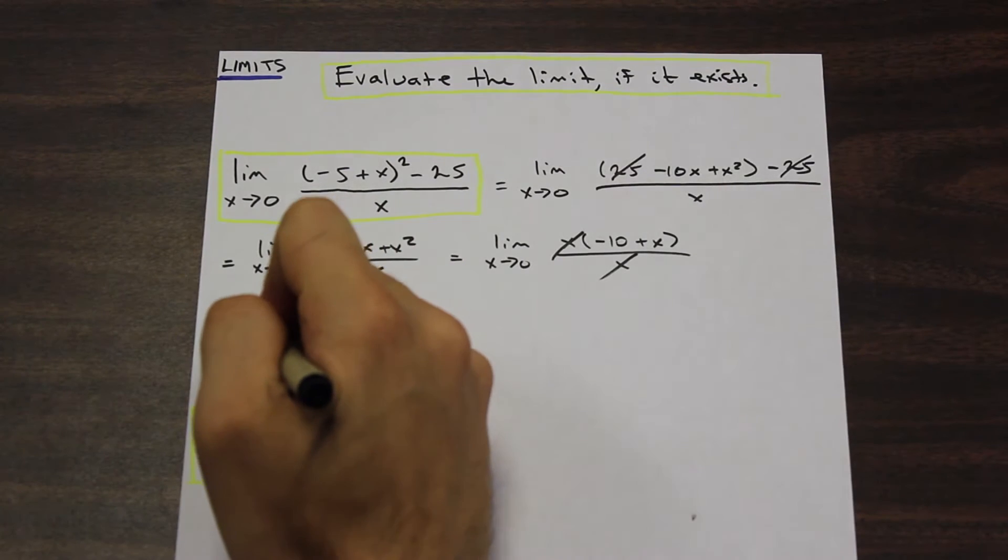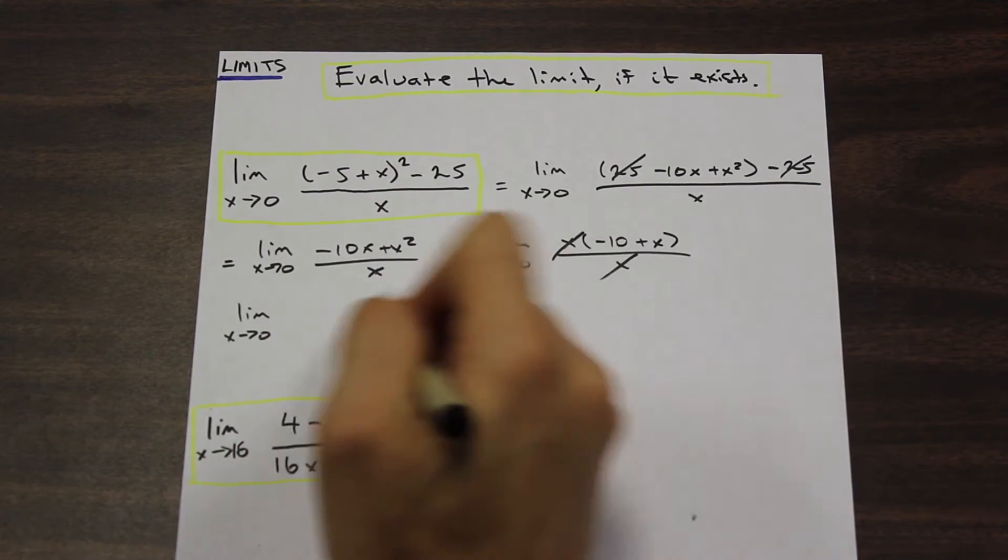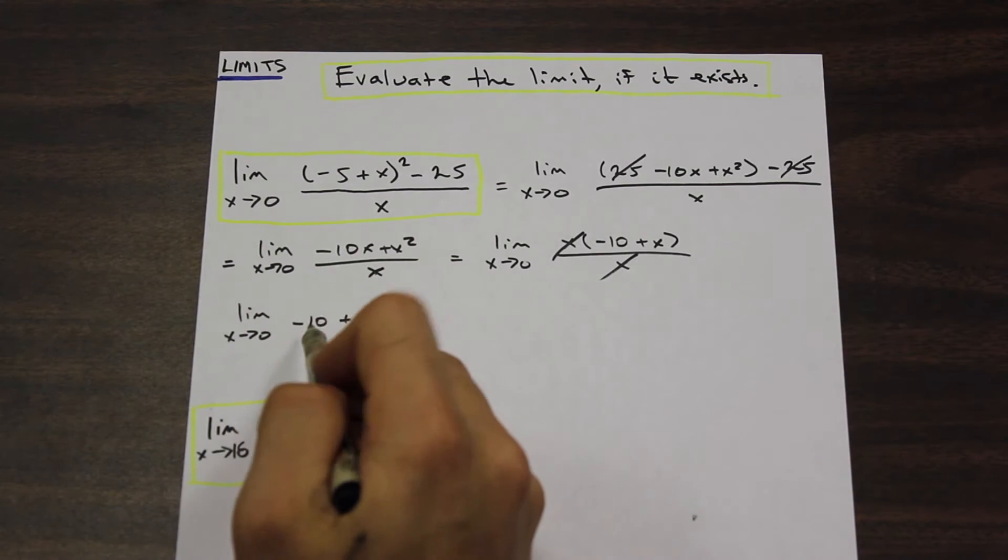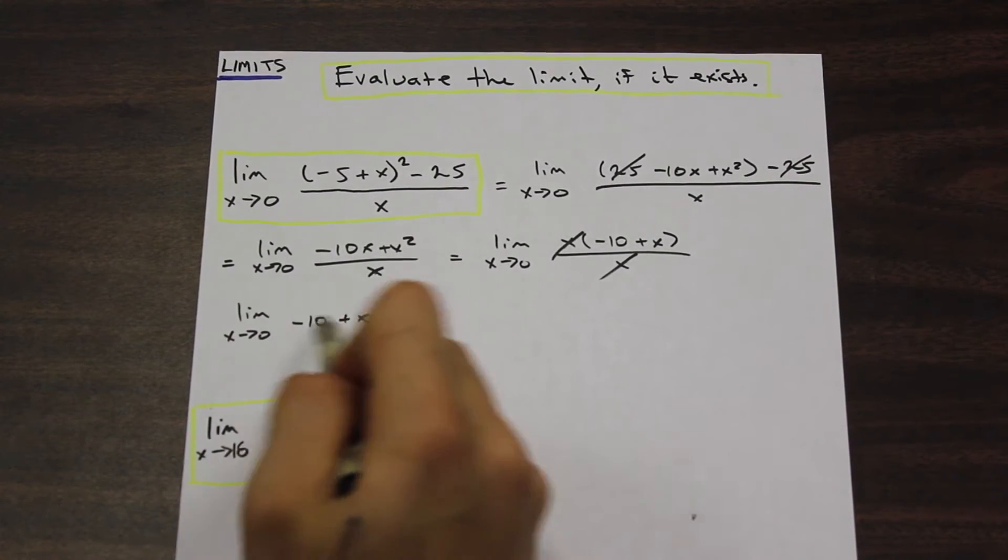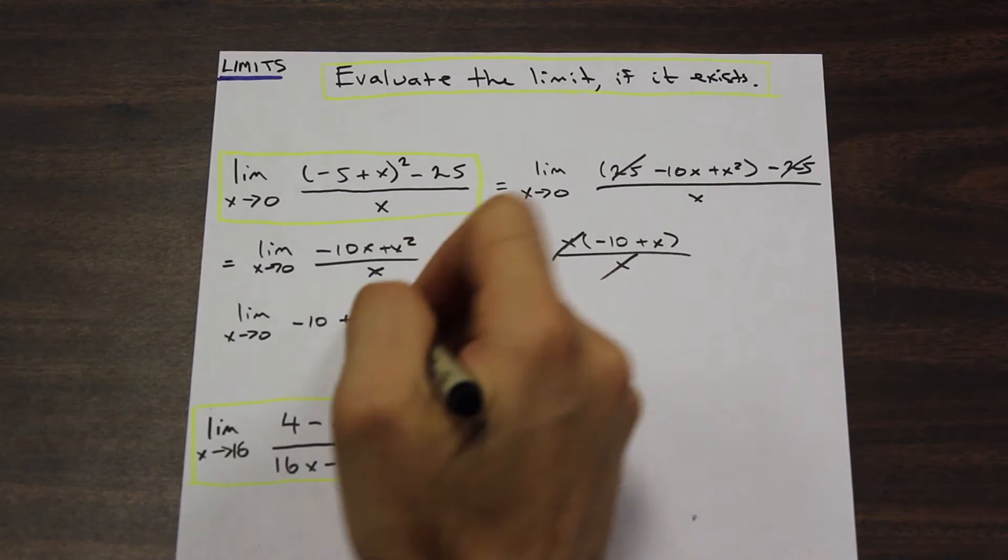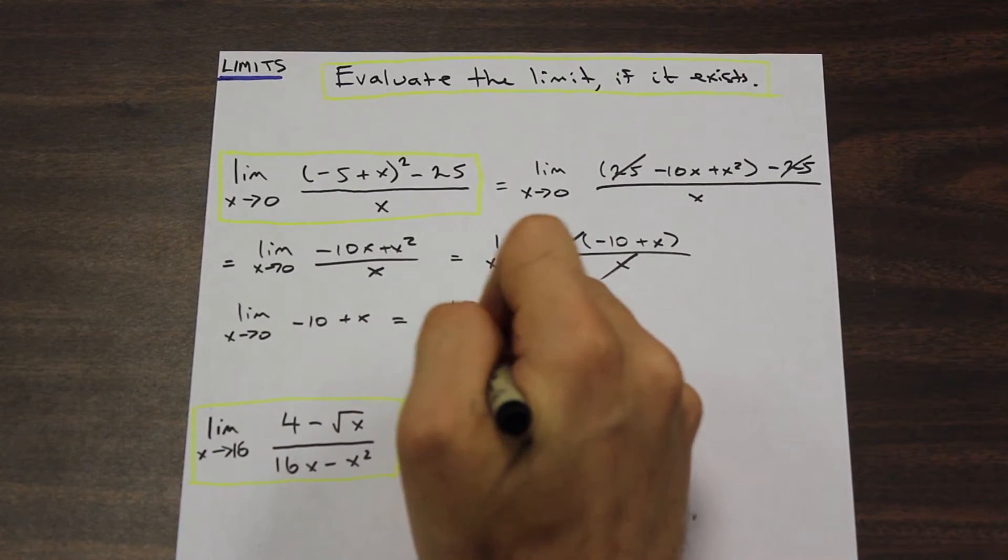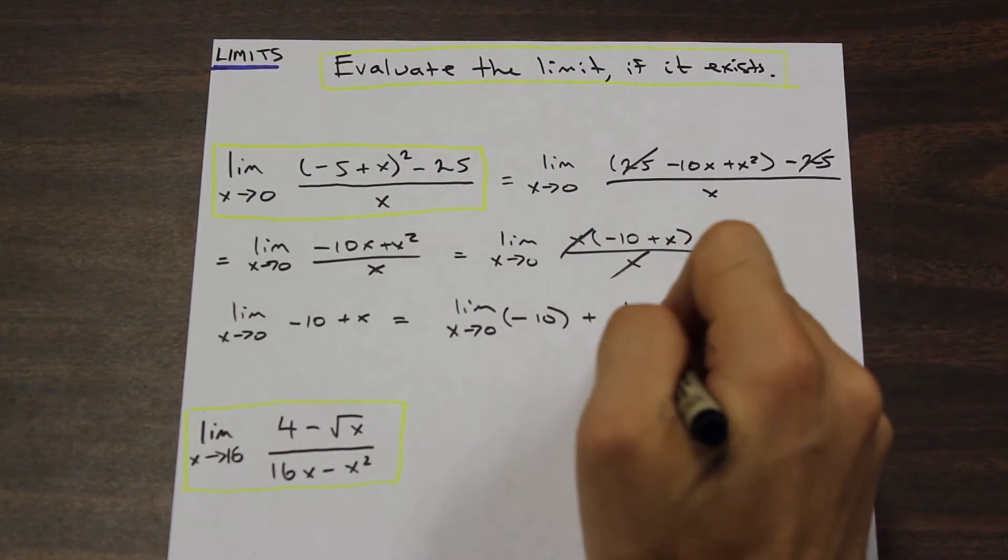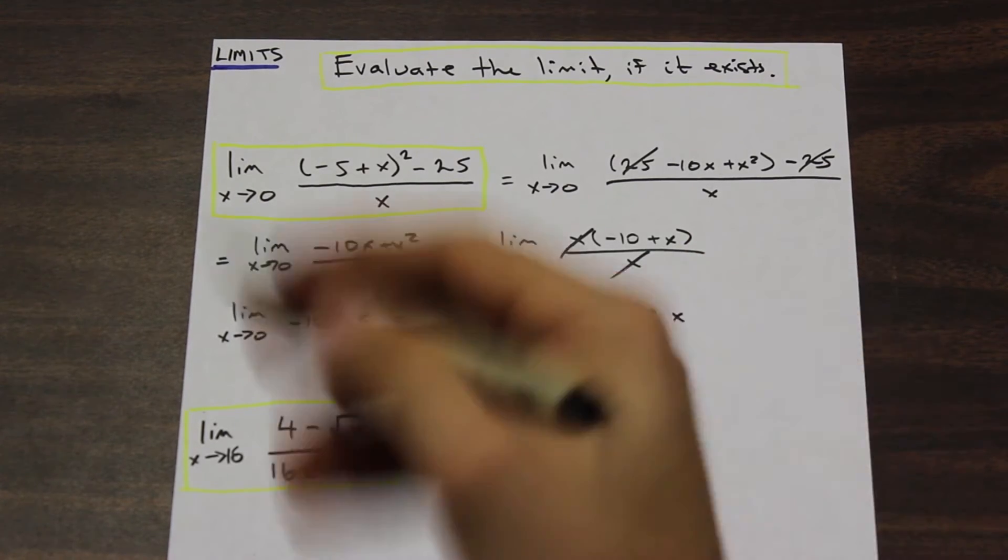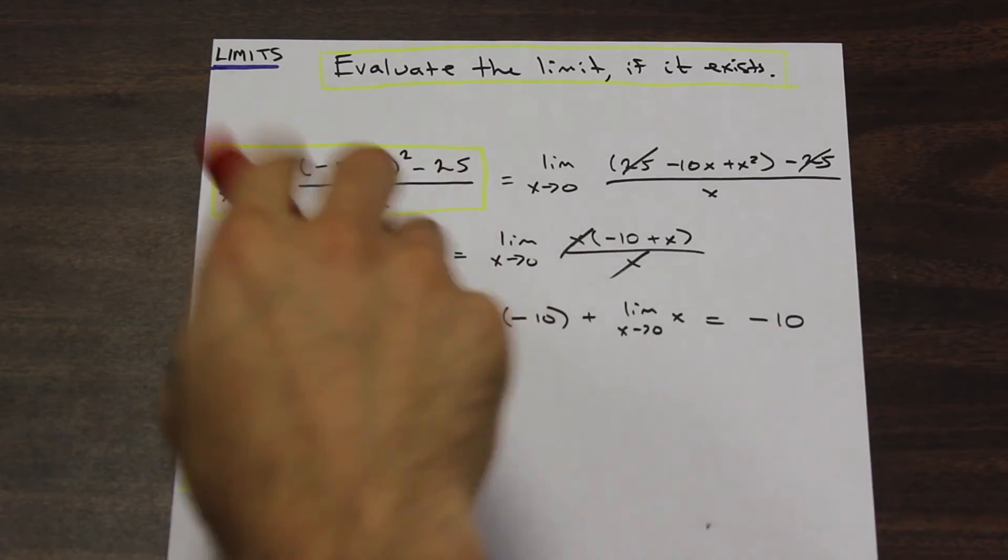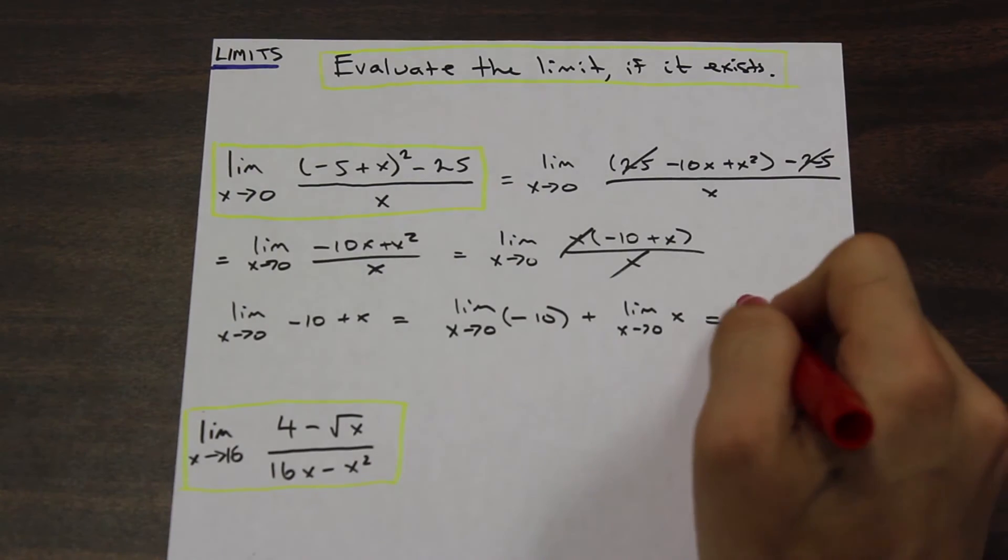And once we've done that, we are left with the limit as x approaches zero of -10 + x. And, well, all we need to do here is apply our limit laws from the previous section. So the limit as x approaches zero of a constant is just that constant, and the limit as x approaches zero in this case is just going to be zero. So I'll write that out. The limit as x approaches zero of -10 plus the limit as x approaches zero of x, and that's just going to be zero, and that is going to be equal to -10. So the limit of this function is -10. It's not actually undefined.